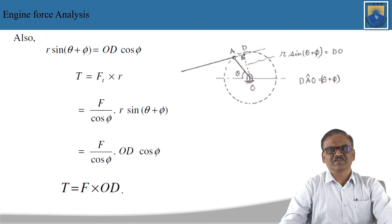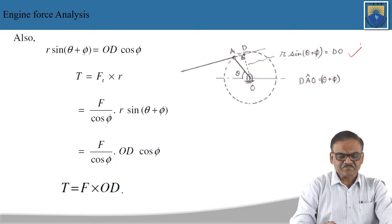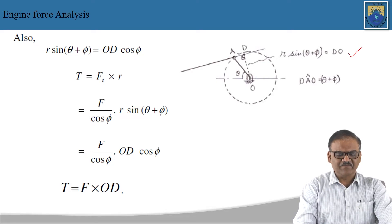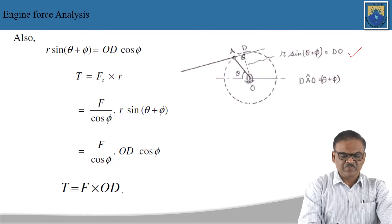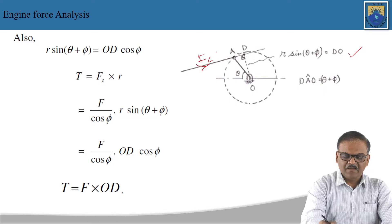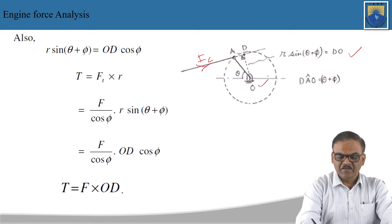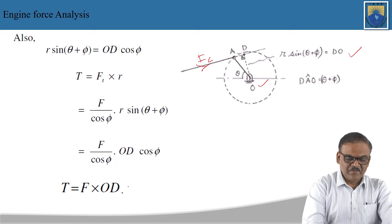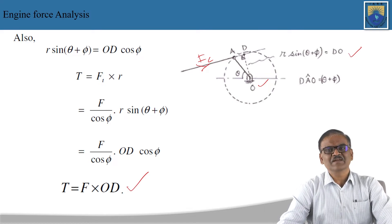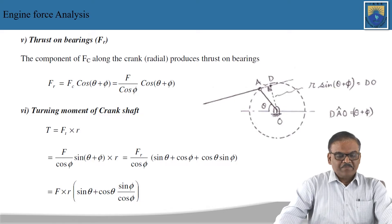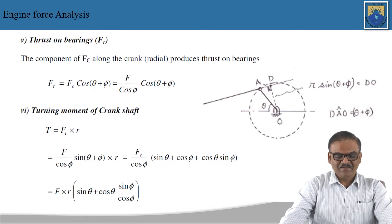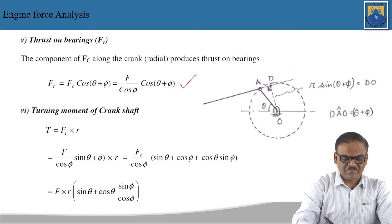Also, r·sin(θ+φ) = od·cosφ, as seen from the triangle dao. Therefore T = ft·r = (f/cosφ)·od·cosφ = f·od. For a graphical approach, if the line fc is extended and a perpendicular is drawn to the center, od can be determined, and from that the turning moment can be determined graphically. This is another easy method to find the turning moment.